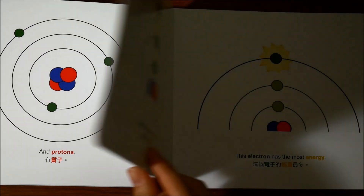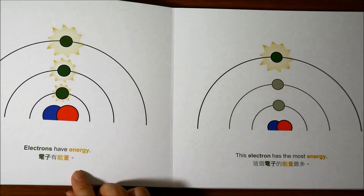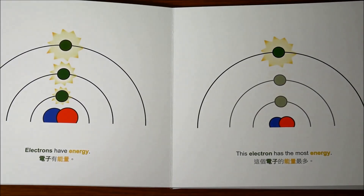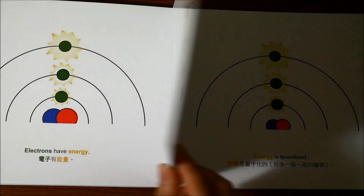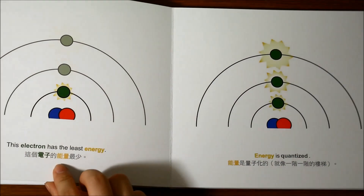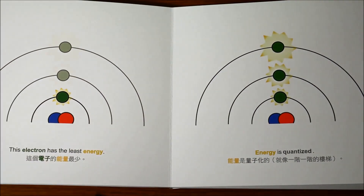Electrons have energy. This electron has the most energy. This electron has the least energy.